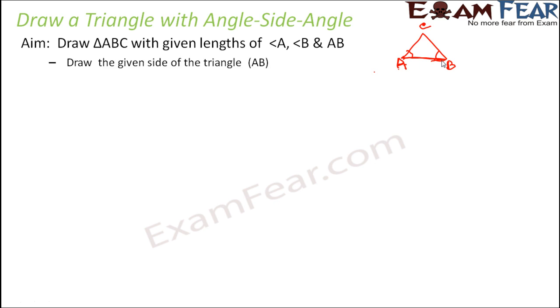First of all, we will draw the given side of the triangle. In this case, you know only one side. So let us draw that side. In this case, that side is AB. So once we have drawn AB, let's draw angle A. I am not getting into the detail of how we draw an angle because you already know that.